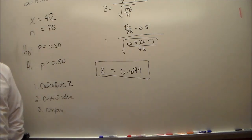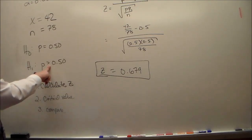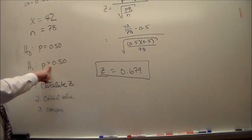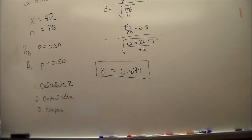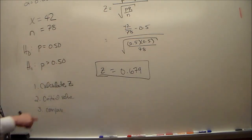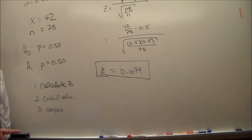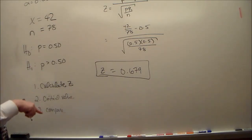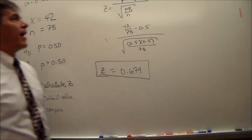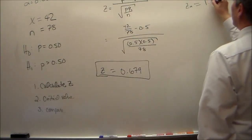At this point we have to think: do we use alpha, or do we use alpha divided by 2? Is this going to be a one-tailed test or a two-tailed test? The way we know is because the alternative is greater than — this will be a one-tailed test. And the critical value is going to be a positive number. If this was less than, it would be a one-tailed test and the critical value would be a negative number. And if this was not equal to, then the critical value would correspond to a two-tailed test.